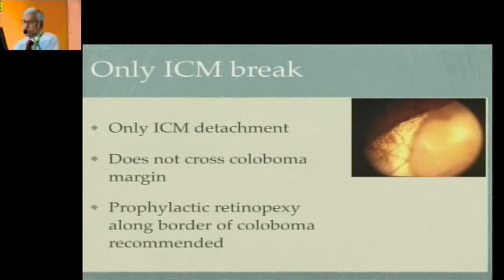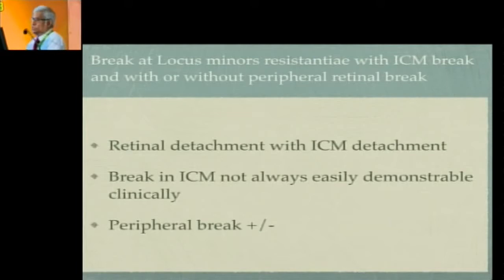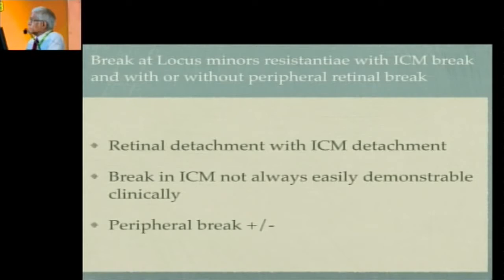When you have a break at the locus minoris resistentiae with an ICM break, with or without a peripheral break, this is exactly what leads to a clinical detachment of retina. The retina is detached, there is also an ICM detachment, and both are communicating with each other — the subretinal space and sub-ICM space communicating through a break at the locus minoris resistentiae. However, the break in the ICM is not easily demonstrable, and the break at the area of least resistance is never demonstrable clinically except by OCT.